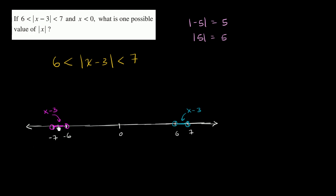Because anything in that interval, if you take its absolute value — its distance from 0 — it's between 6 and 7 away from 0. For example, negative 6.2 is between 6 and 7 away from 0. So the absolute value captures the distance to the left of 0 for values in the negative interval, and the distance to the right of 0 for values in the positive interval.